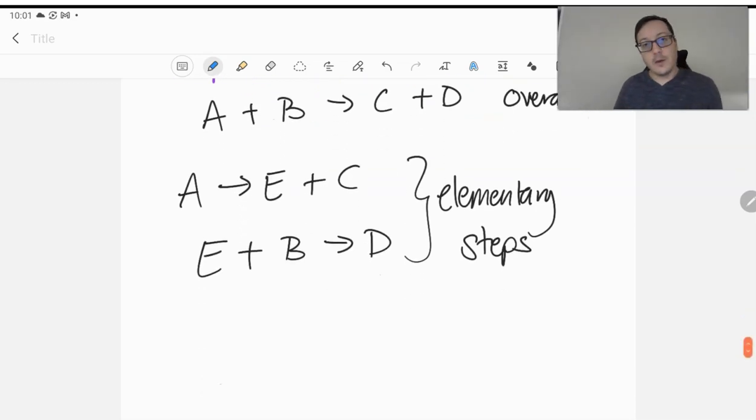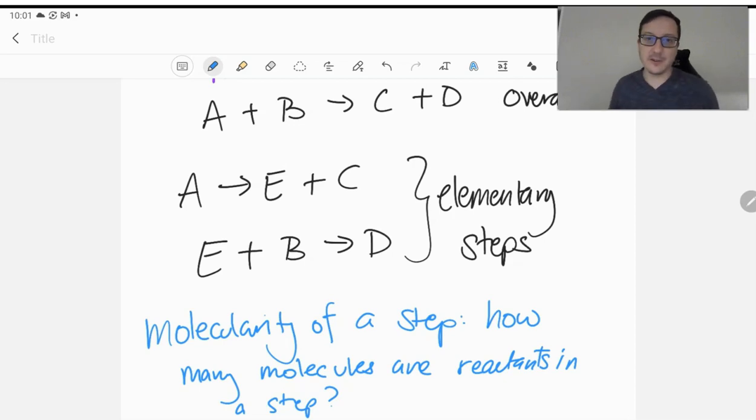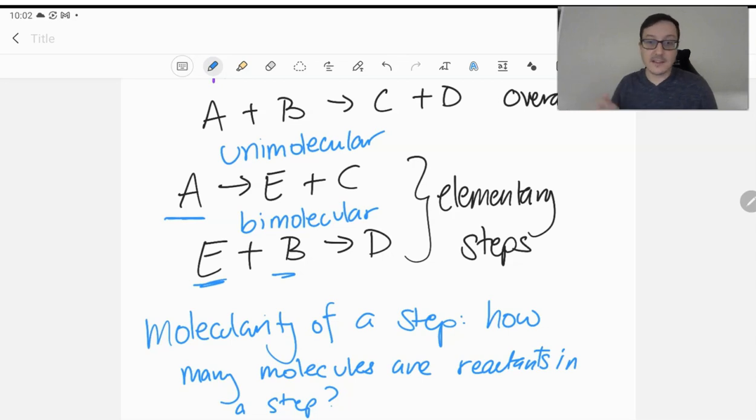When we look at these, we can also talk about the molecularity of a step. And that question, the question that that term answers is how many molecules are involved? How many are reactants in a particular step? And this includes coefficients. Assuming these coefficients are all one for our fake things, we would call this step unimolecular. A single molecule decomposes and undergoes some reaction. This reaction here is bimolecular. It is made of two molecules doing something, in this case combining to make product D.